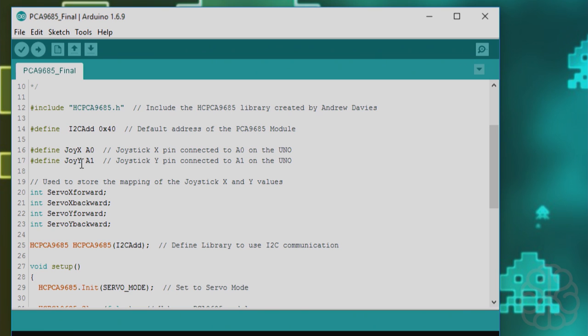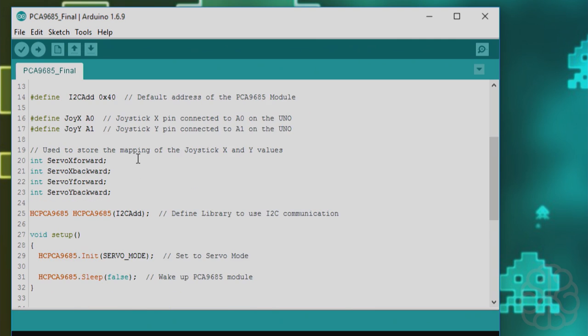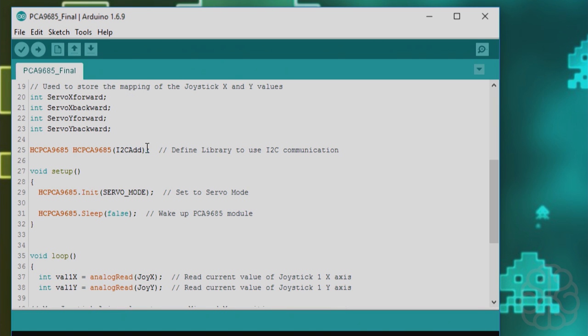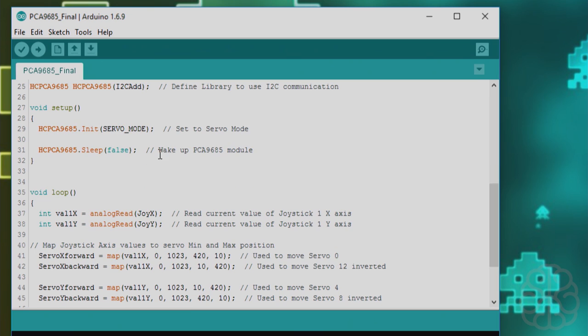We're defining joy x and joy y connected to A0 and A1 on our joystick to read the analog values of the joysticks. Moving along we get some variables here. Since I'm using four servos today, I'm going to have four variables to hold the map values. One will go forward, one will go backward, we'll see that a little bit at the bottom here. Then we're defining the library with the address we assigned.